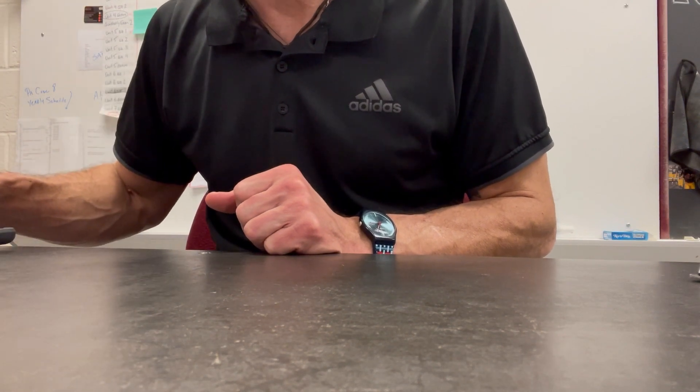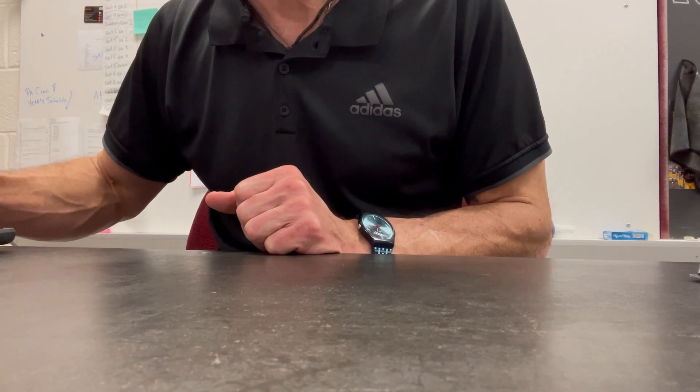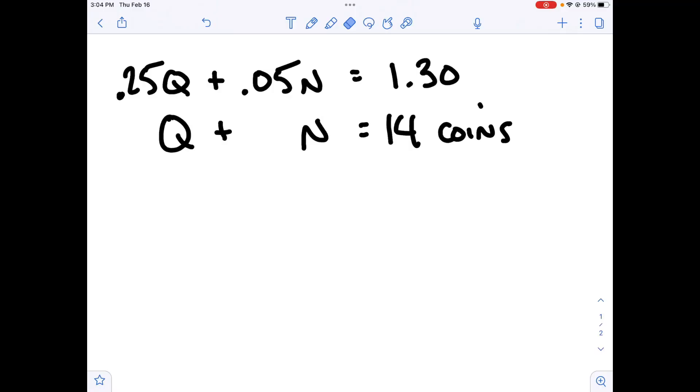So I'd like to have some of those. So what I'll do is I'll multiply the bottom equation by something that allows me to get some opposites. And that bottom equation is going to multiply by negative 0.25. Basically, it's just the value of a quarter. And what I'm going to get out of that is going to be negative 0.25Q. That's the first piece. And then I'm going to get plus negative 0.25N.